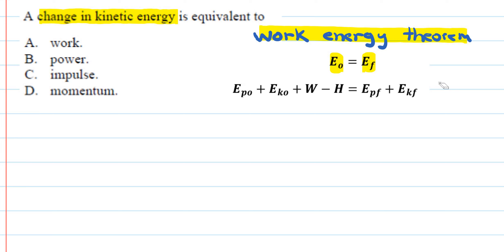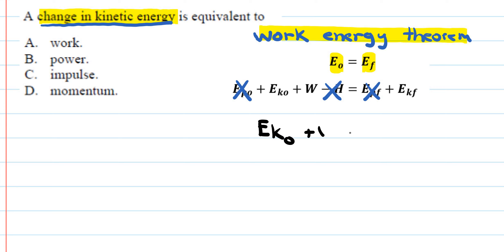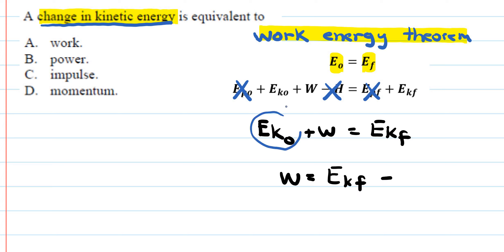Since we're dealing with a change in kinetic energy, we can remove potential energy and friction terms (assuming no friction is mentioned). This leaves: KE_initial + Work = KE_final. Isolating for work: Work = KE_final minus KE_initial.